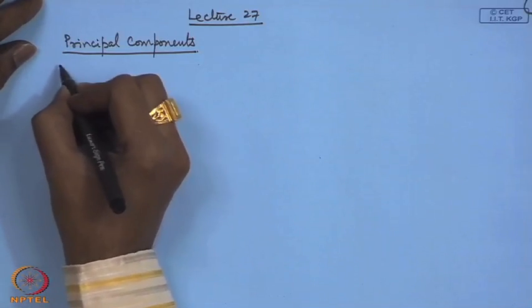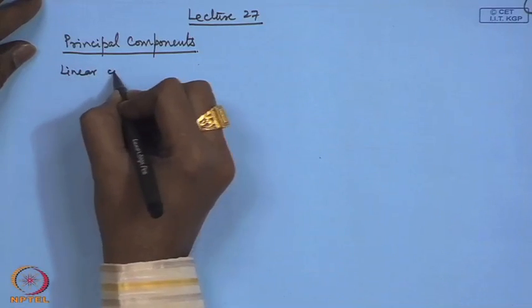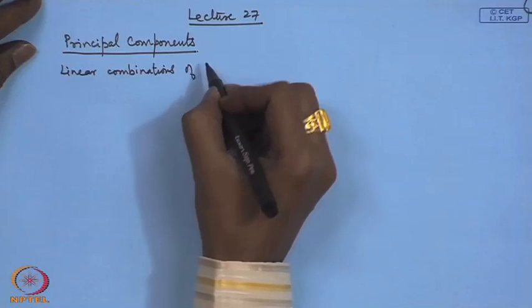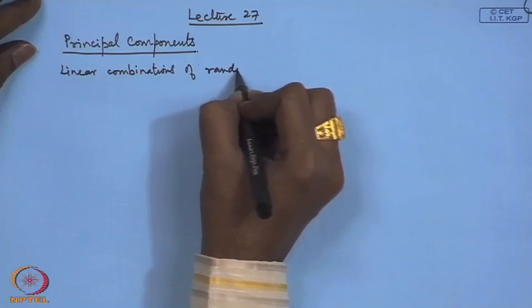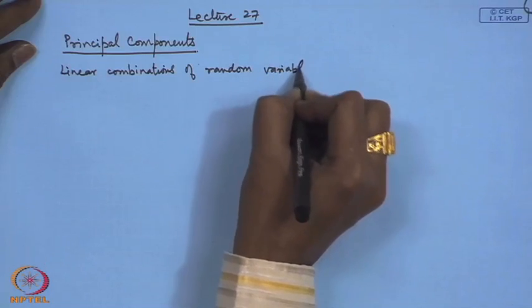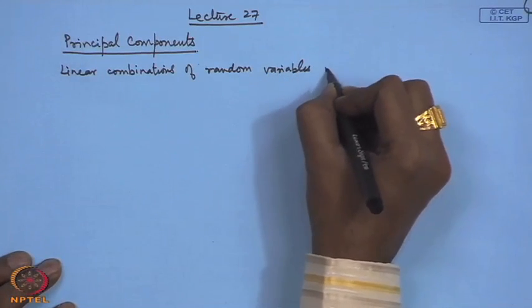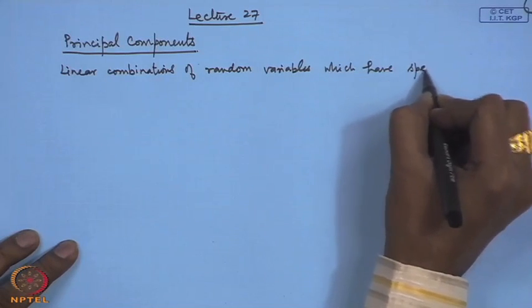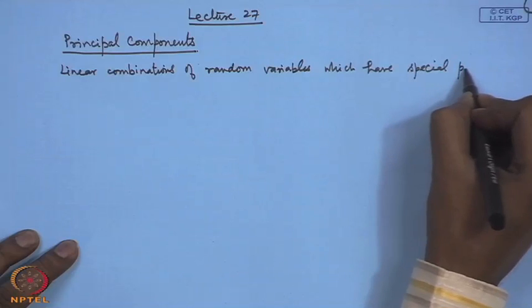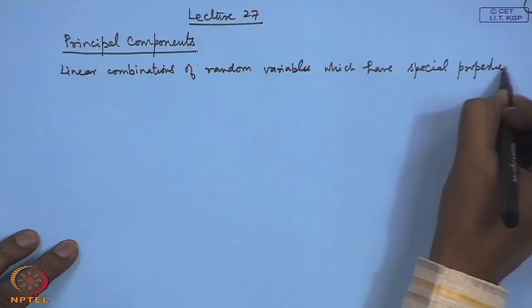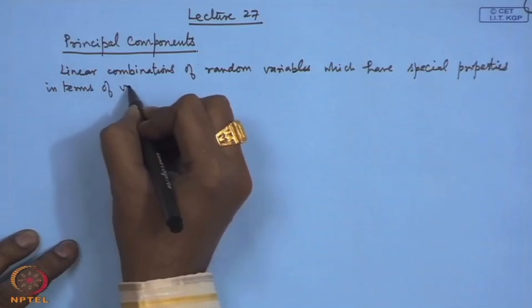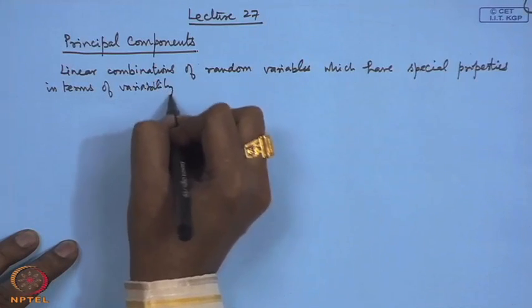The problem of principal components is the determination of linear combinations of random or statistical variables which have special properties in terms of variability.